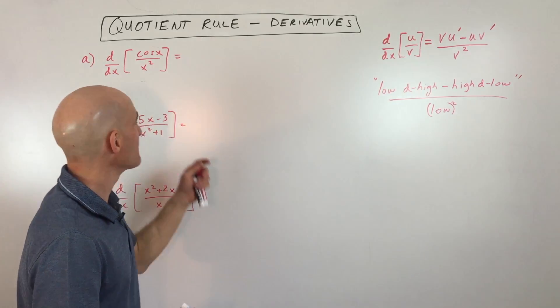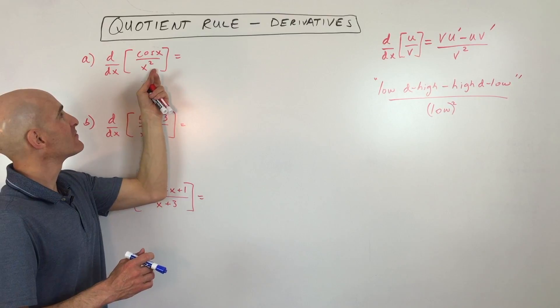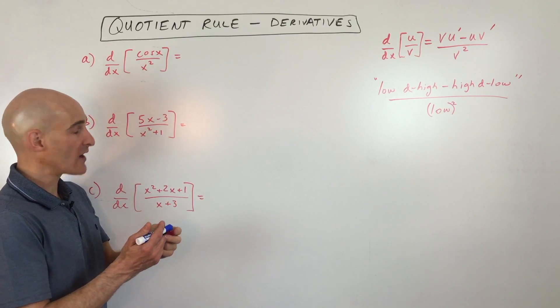Okay, let me show you how that works. So we've got the rhyme down. So you want to take the derivative of this quotient, two quantities divided.